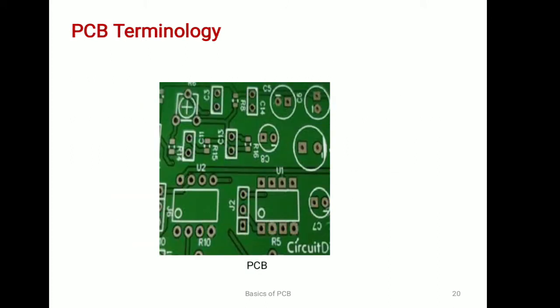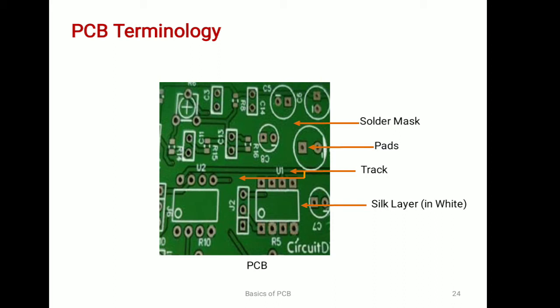This is a green mask PCB. The green color layer is for the solder mask. The white color marking for components is the silkscreen layer. These are tracks, these are pads, and below the solder mask is the copper layer.